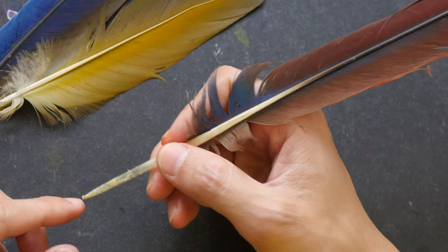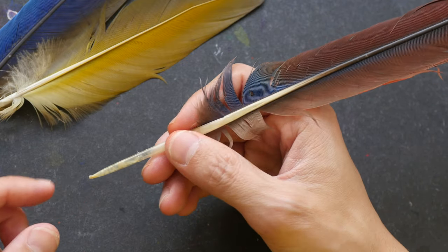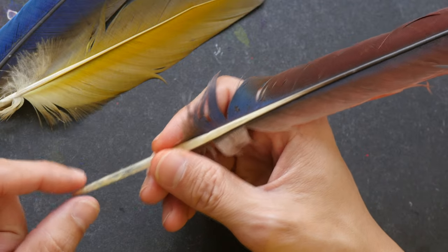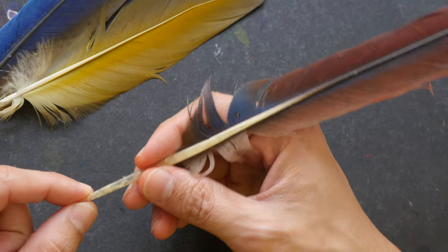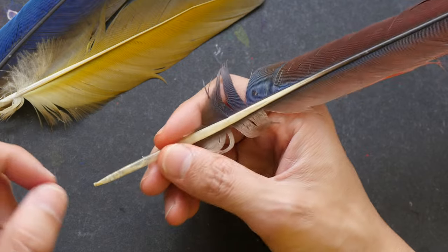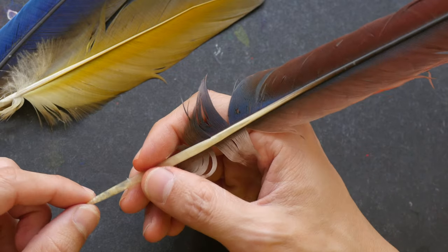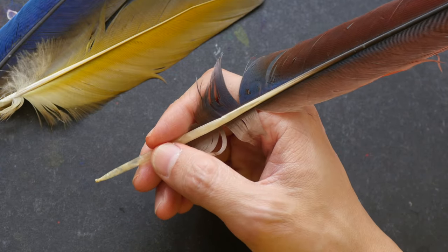Some art shops do sell feathers for writing or drawing purposes. Some of them have the metal nib attached to the feather, that's to protect the shaft and will obviously allow you to use the feather much longer.